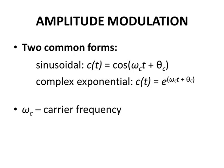The second is complex exponential, where c(t) = e^(ω_c·t + θ_c). In both cases, ω_c is known as the carrier frequency.